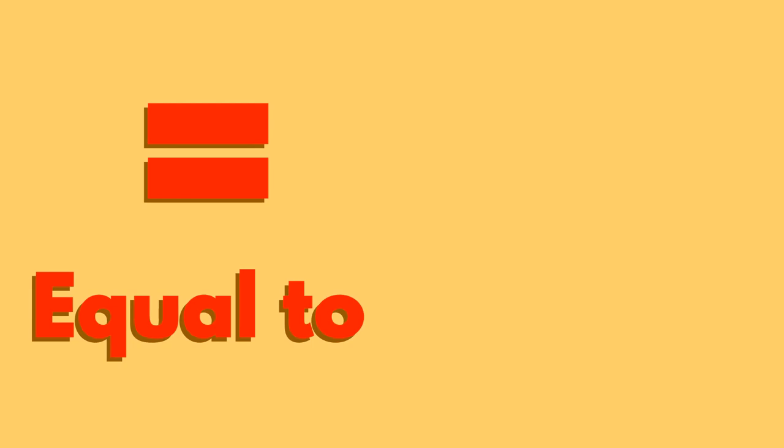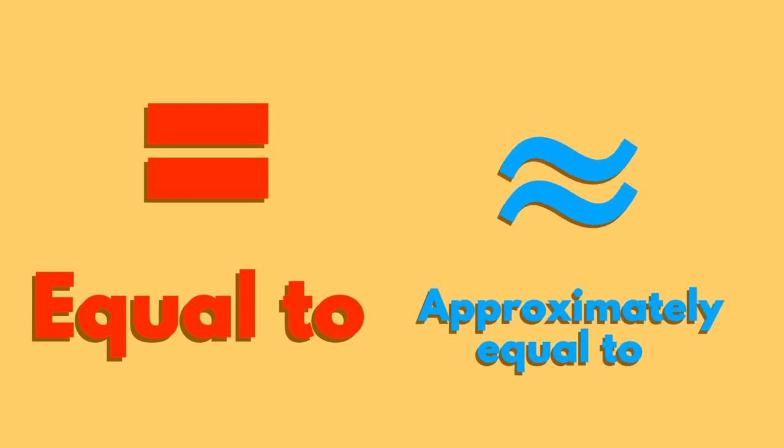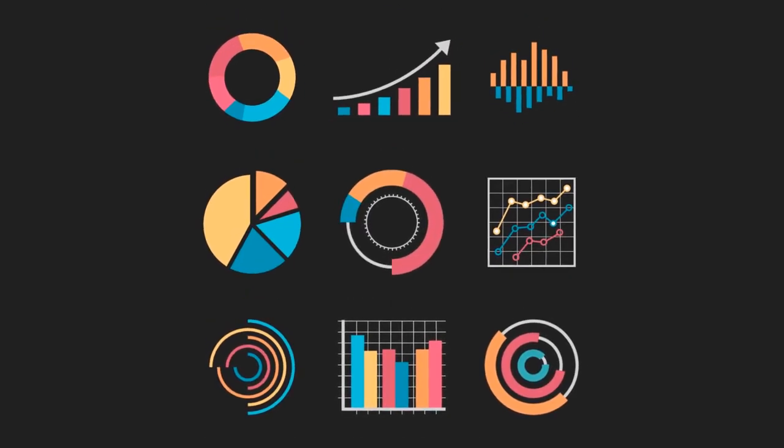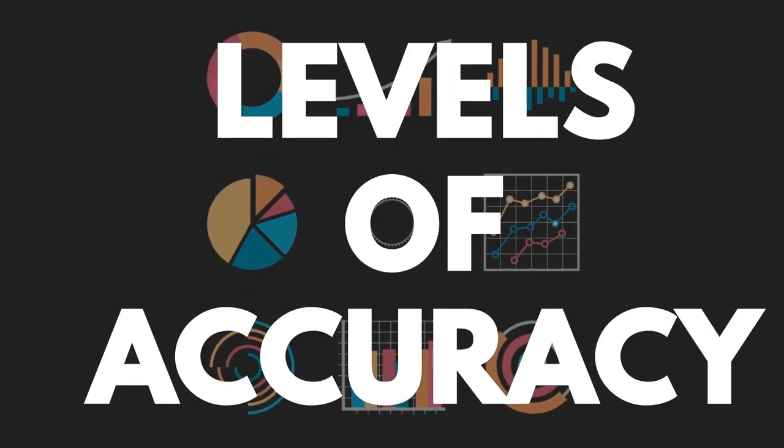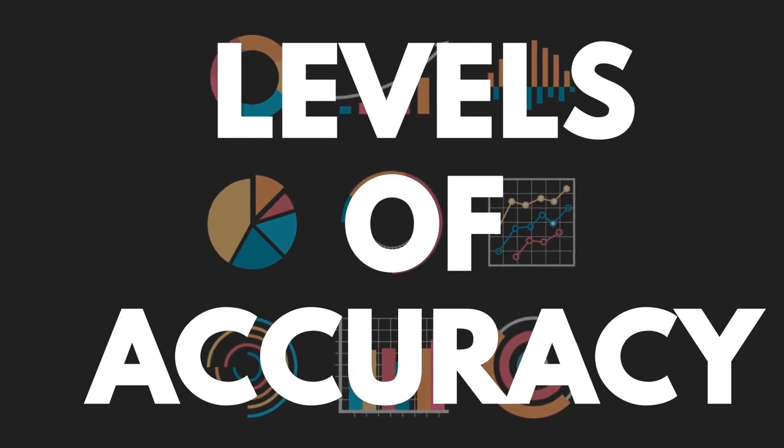We know that this sign means equal to, but this sign means approximately equal to. When rounding a number or estimating a value, it's important to remember that we're working within levels of accuracy. Sometimes we have to decide what to round to.